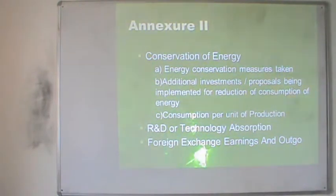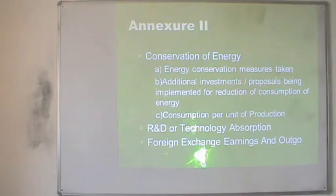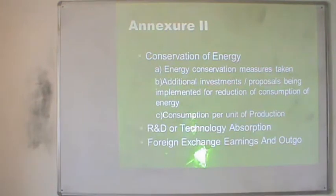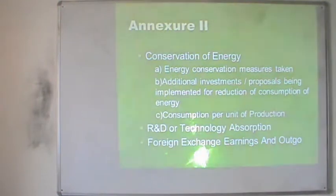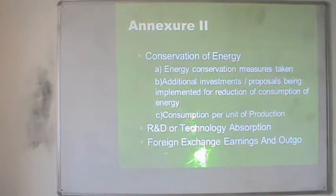The other two points are related to research and development or technology absorption, sometimes given in Annexure 2 or a separate annexure. The company presents research and development activity, any technology purchased, created, or newly developed. Finally the company will present foreign exchange earnings and foreign exchange outgo — income from the foreign market. If the company is supplying goods to foreign markets, details are shown here, along with profit from foreign exchange transaction differences under a separate heading.